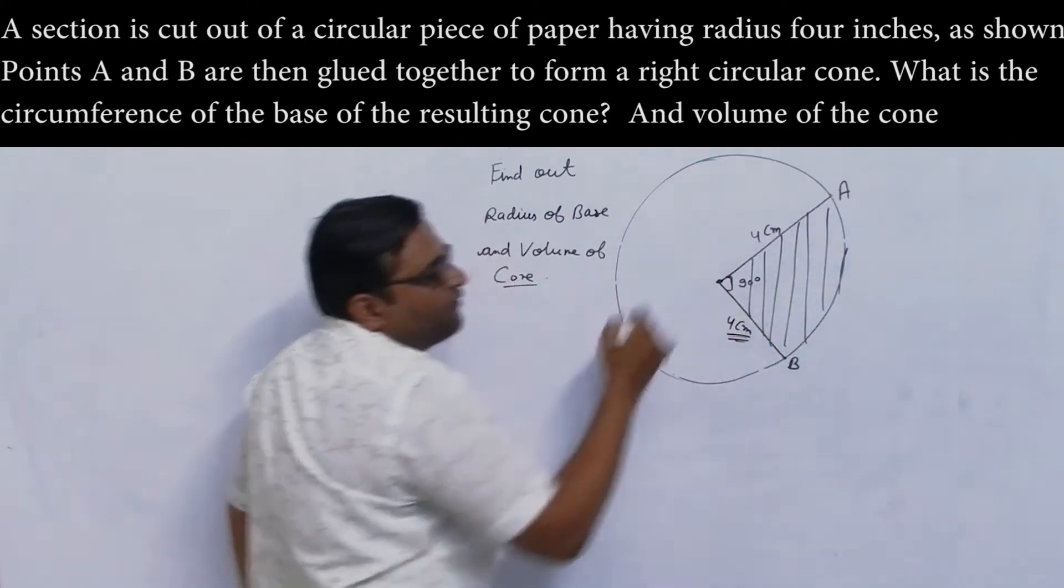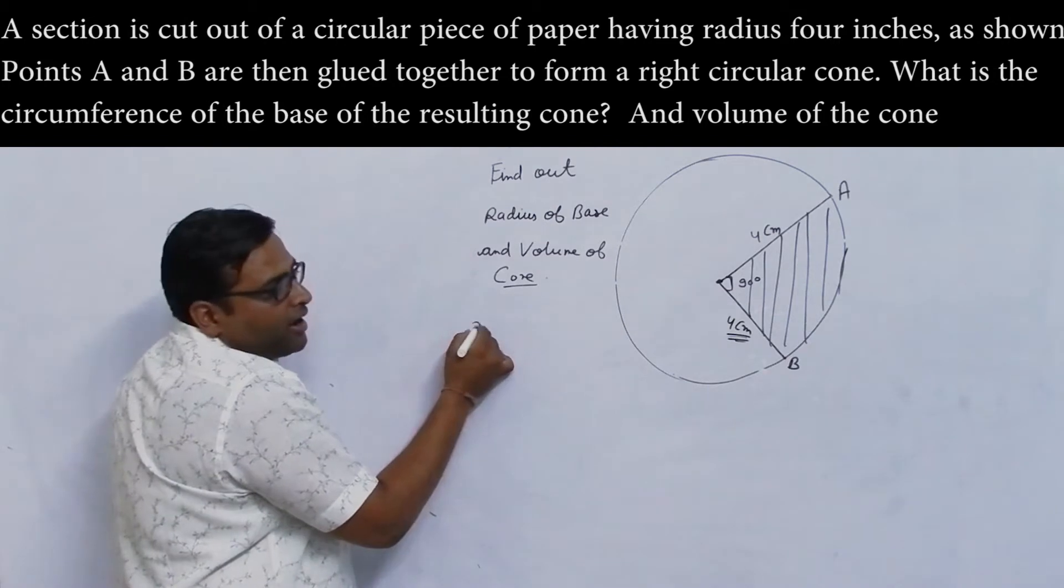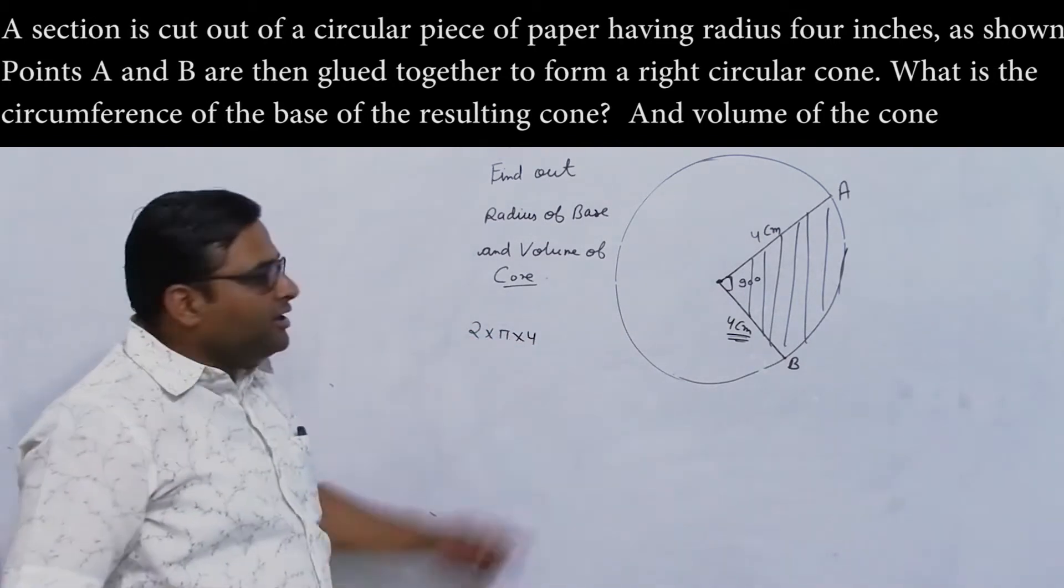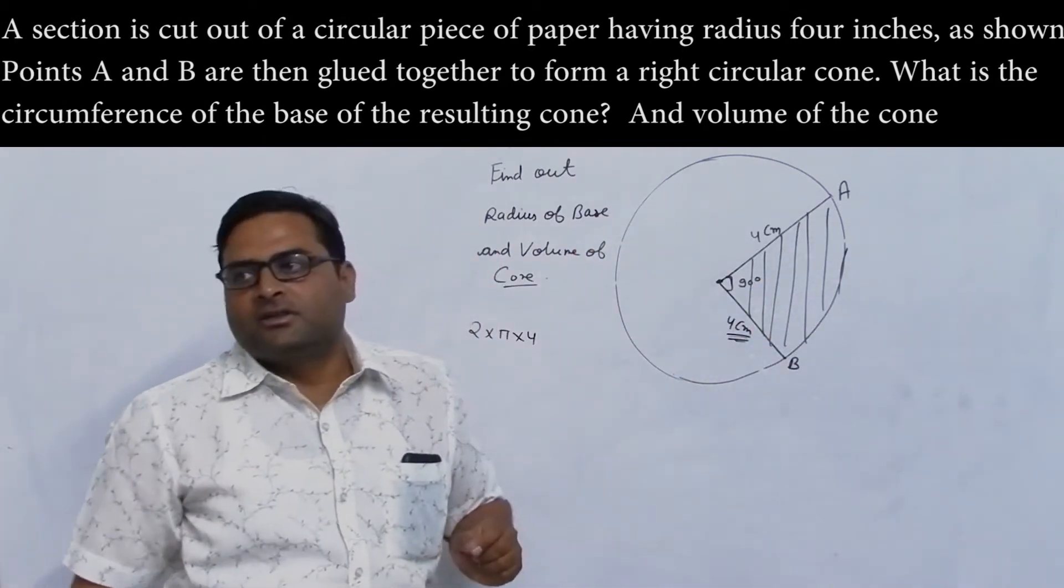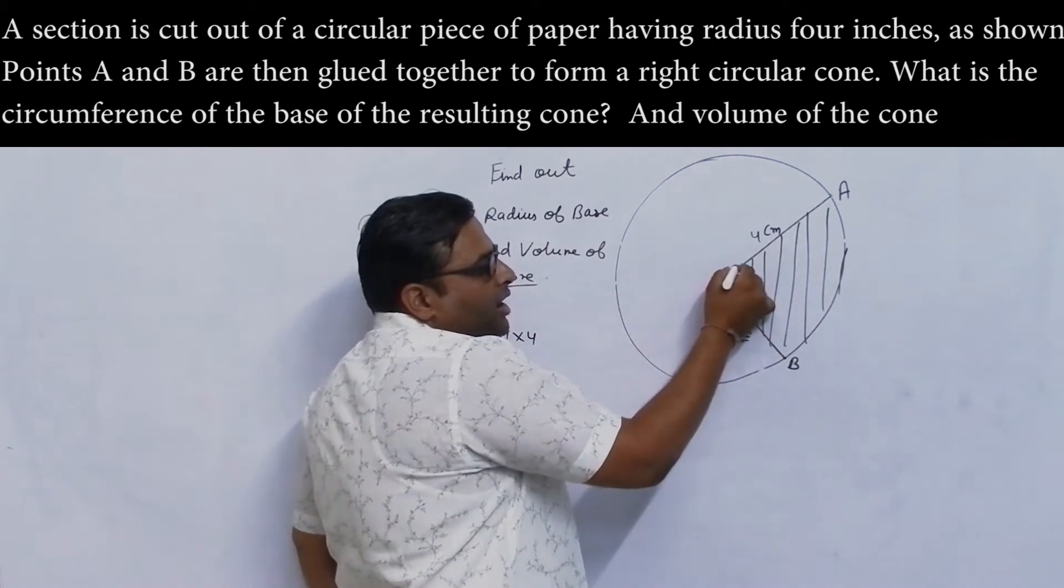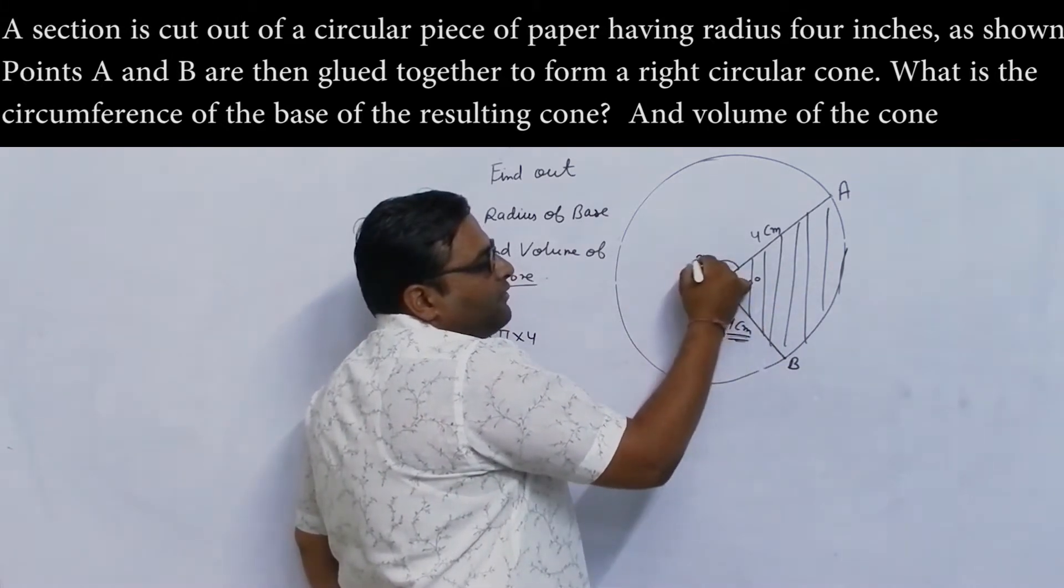If I say that the whole circumference is how much? 2 times pi times 4. What is it? Circumference. Now the portion cut is here. How much is it? 270 degrees.